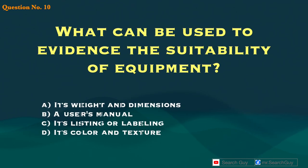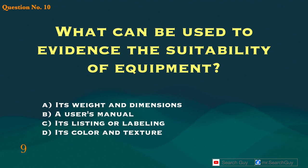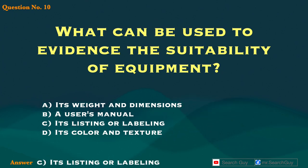Question 10. What can be used to evidence the suitability of equipment? A. Its weight and dimensions. B. A user's manual. C. Its listing or labeling. D. Its color and texture. Answer: C. Its listing or labeling.